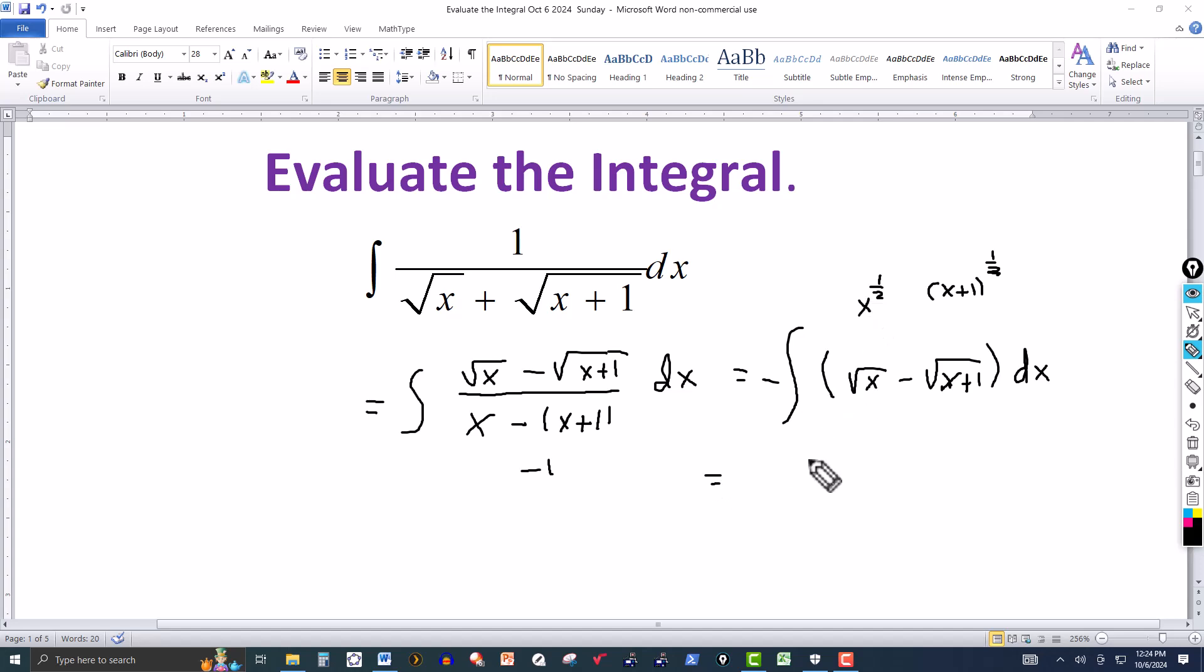So we add 1 to the exponent. For the first one here, integrate each one individually. So adding 1 to that gives me 3 halves. And then I divide the coefficient by 3 halves. That gives me 2 thirds here.